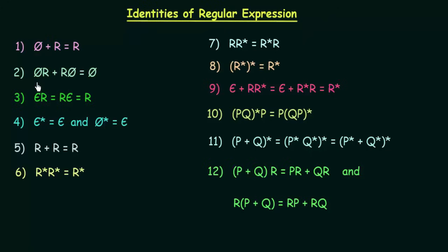The second identity says φ·r ∪ r·φ = φ. That means if you concatenate an empty set φ with a regular expression, and if you also concatenate a regular expression with an empty set φ, and you perform the union of them, then what you get is an empty set φ.